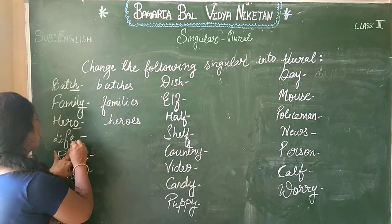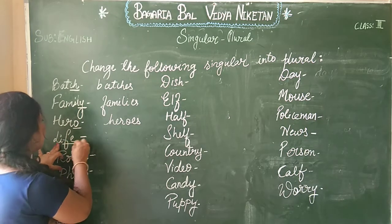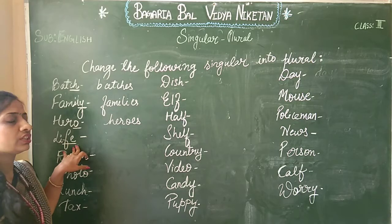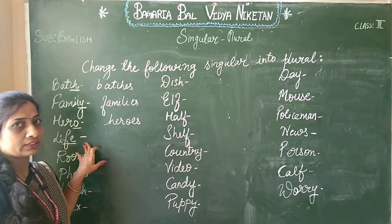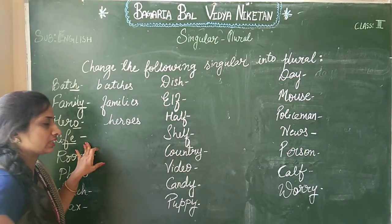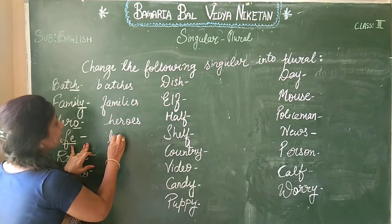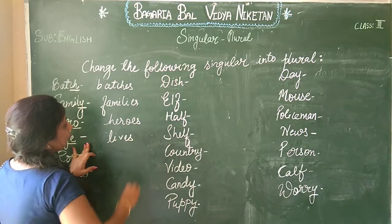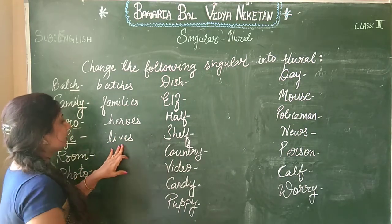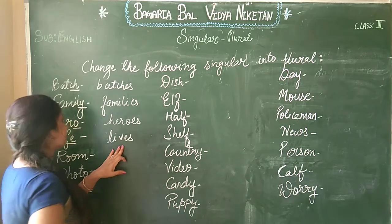Next: 'life'. At the end there is F and E. Where F and E comes, we replace FE with VES. So the spelling will be changed into L-I-V-E-S, 'lives'.